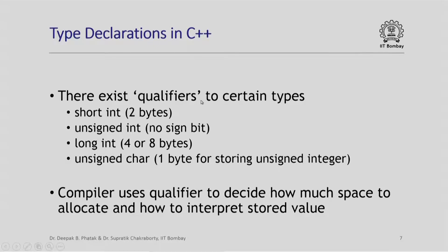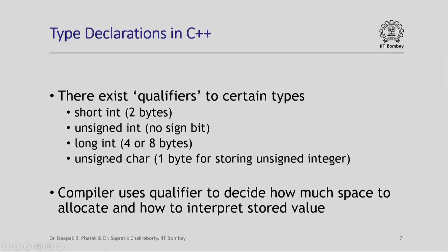You can also use certain qualifiers to types. For example, 'short int' basically says I am going to store an integer but I only need 2 bytes. 'unsigned int' means I want to treat it as an unsigned number with no sign bit. 'long int' is used to say I am going to store a very large integer value — please allocate 8 bytes, though some compilers may use 4 bytes for long int. Or 'unsigned char' means use 1 byte as in a character, but for storing unsigned integers. The compiler uses these qualifiers to decide how much space to allocate for a variable and how to interpret the stored values.